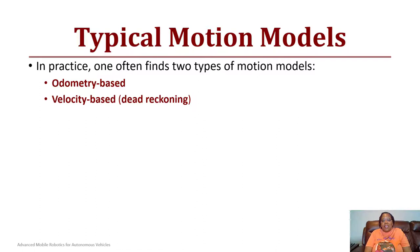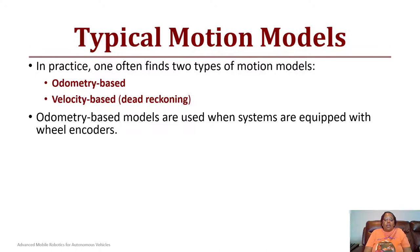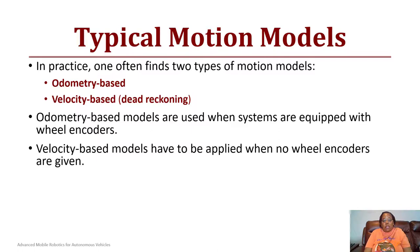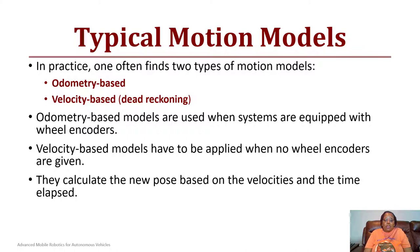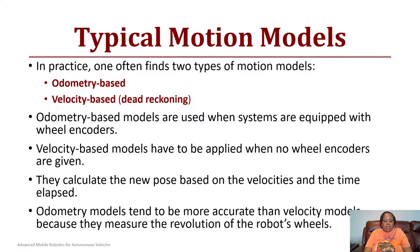There are two typical motion models: one of them is odometry-based and one of them is velocity-based. Velocity-based is the same as dead reckoning where you are assuming you give the robot a forward direction and then you're just estimating it getting there. Odometry-based is normally used with robots that are equipped with wheel encoders, so it's not purely dead reckoning. You can actually estimate a little bit of how accurate the robot was by reading the encoder data. Velocity-based models have to be applied when you don't have any wheel encoders on your robot and they are used to calculate the new pose of the robot based upon velocity and time. Odometry models tend to be more accurate than velocity models because there is a way to actually measure the revolution of the robot's wheels as you can imagine.